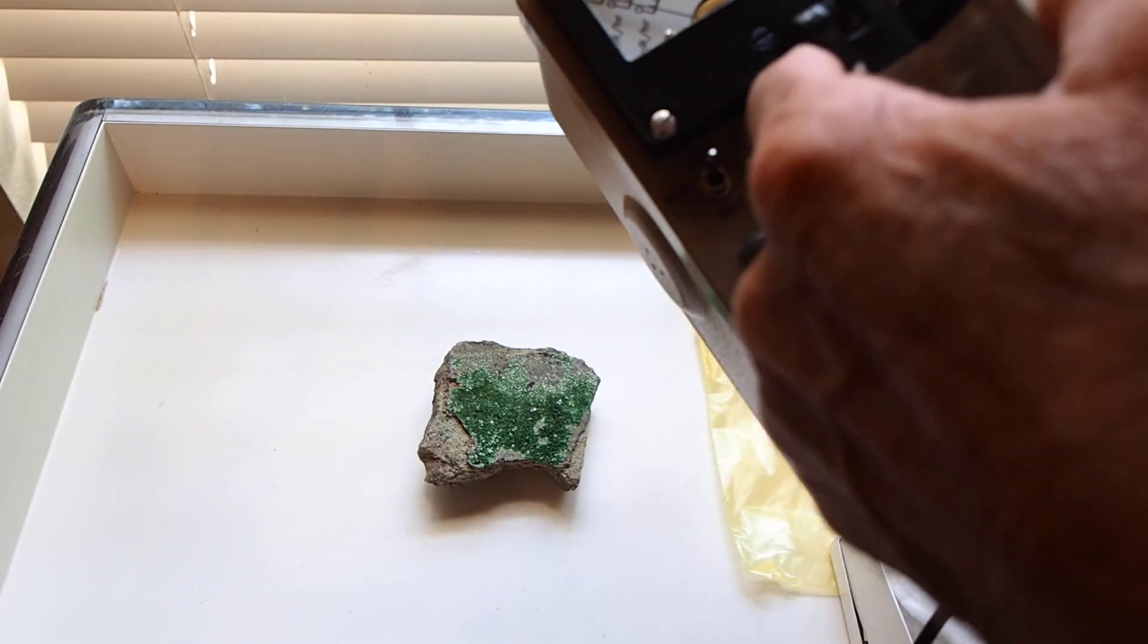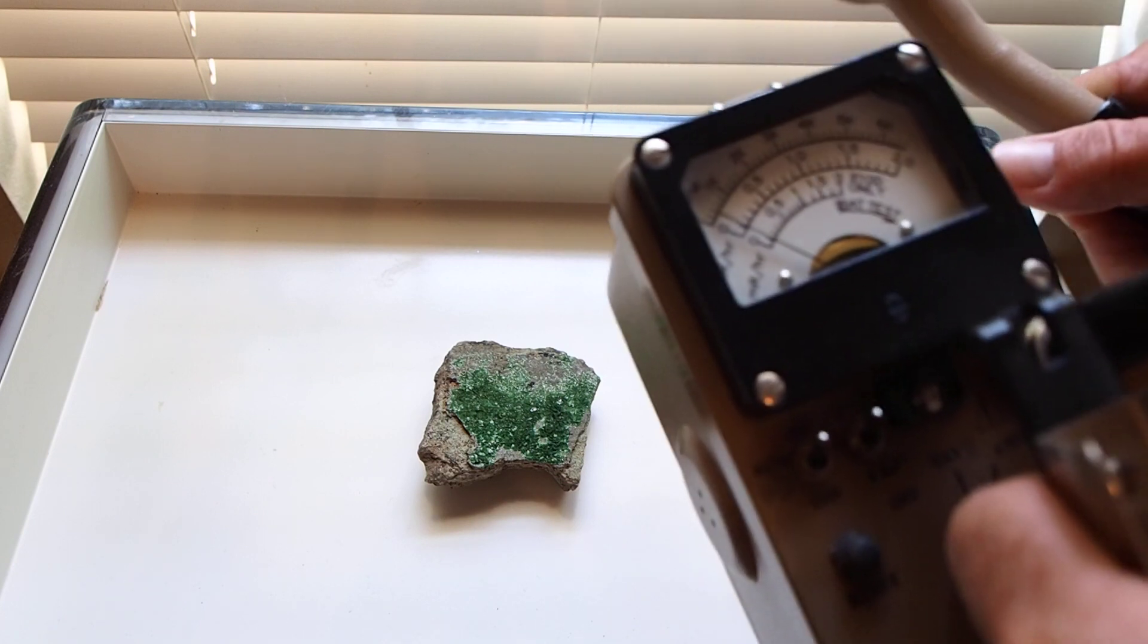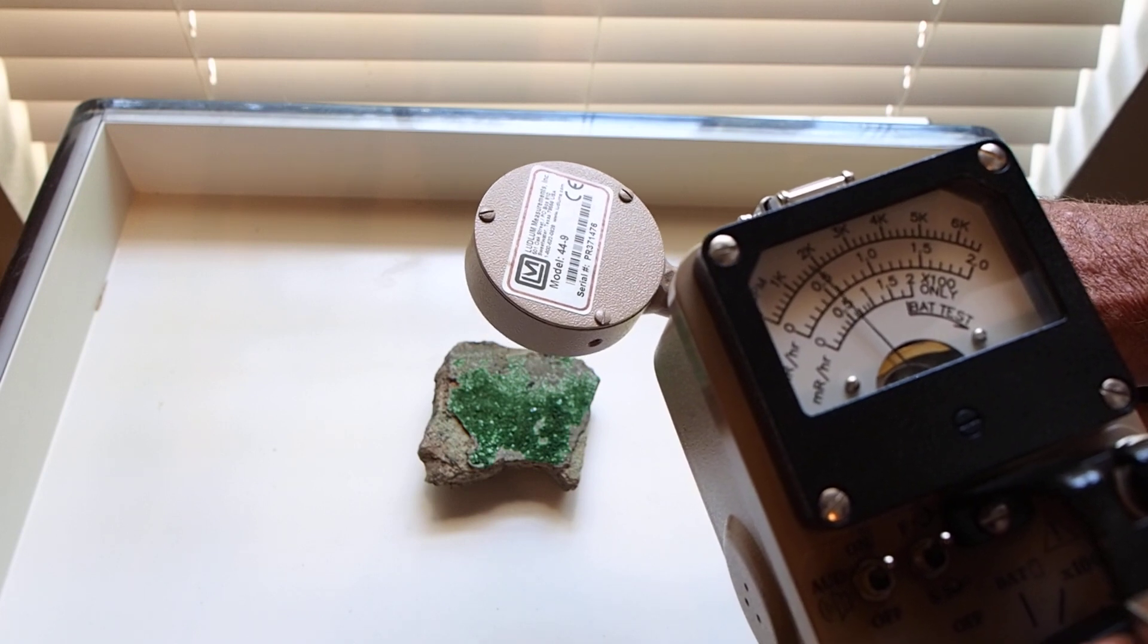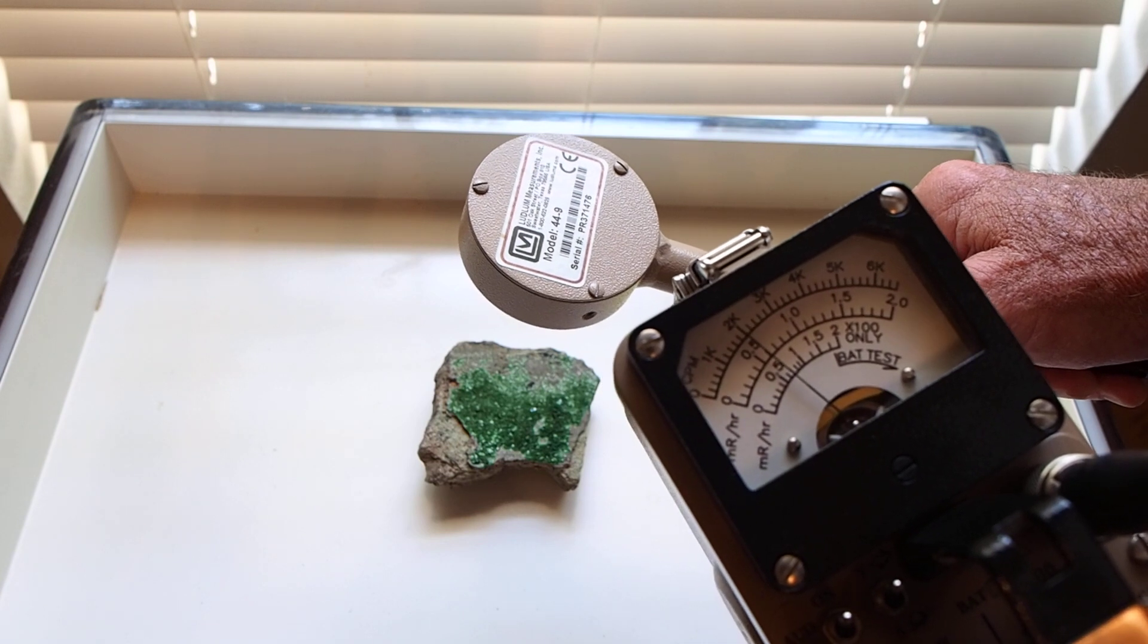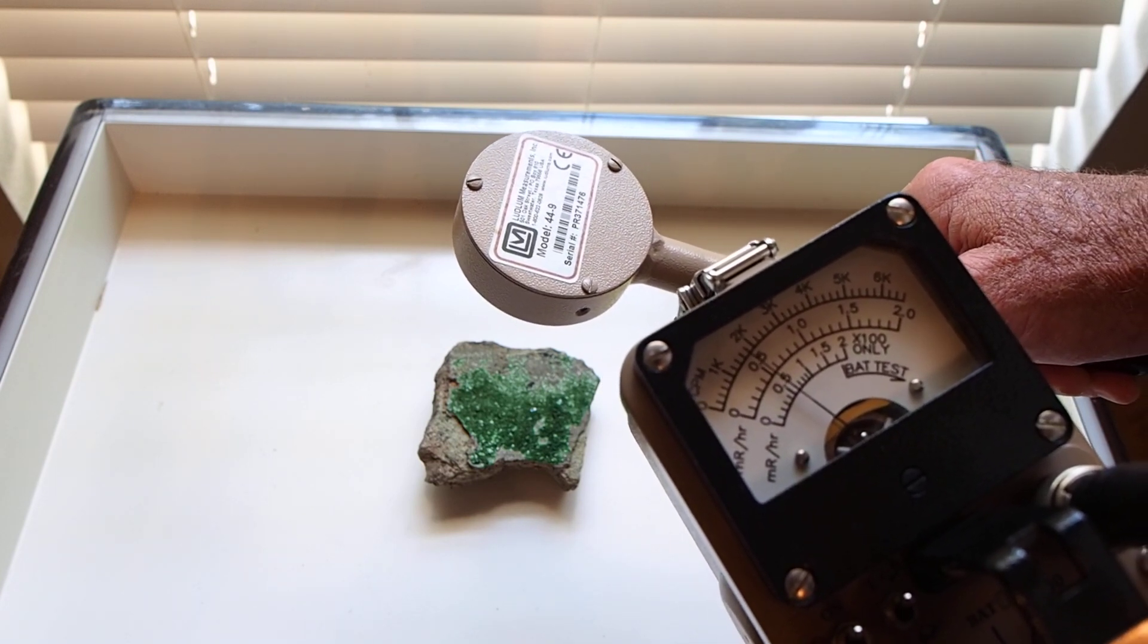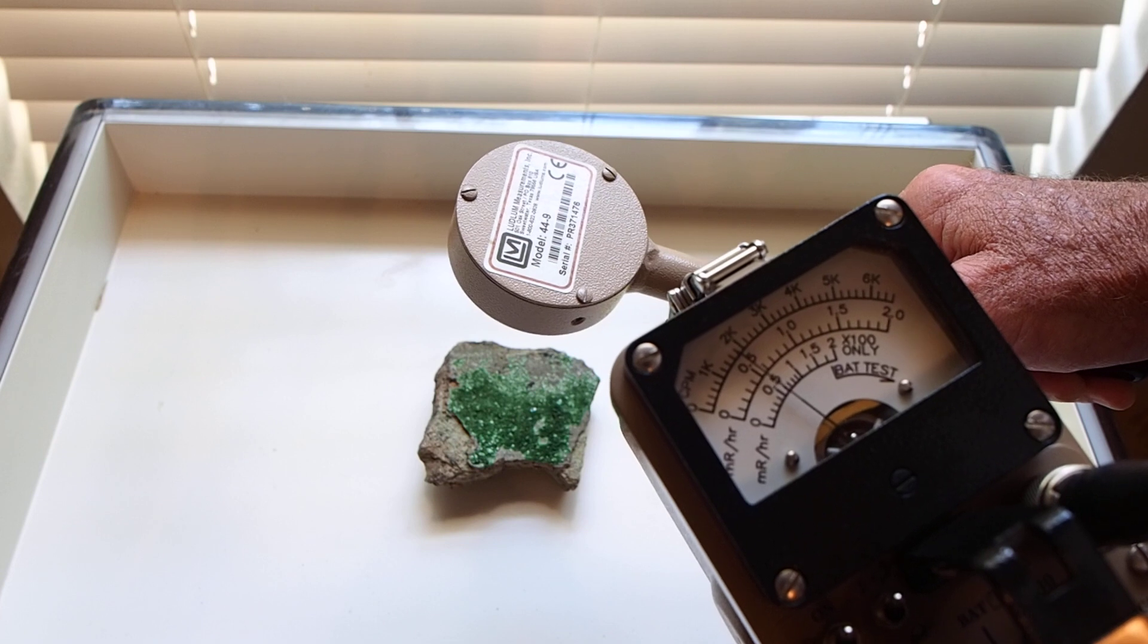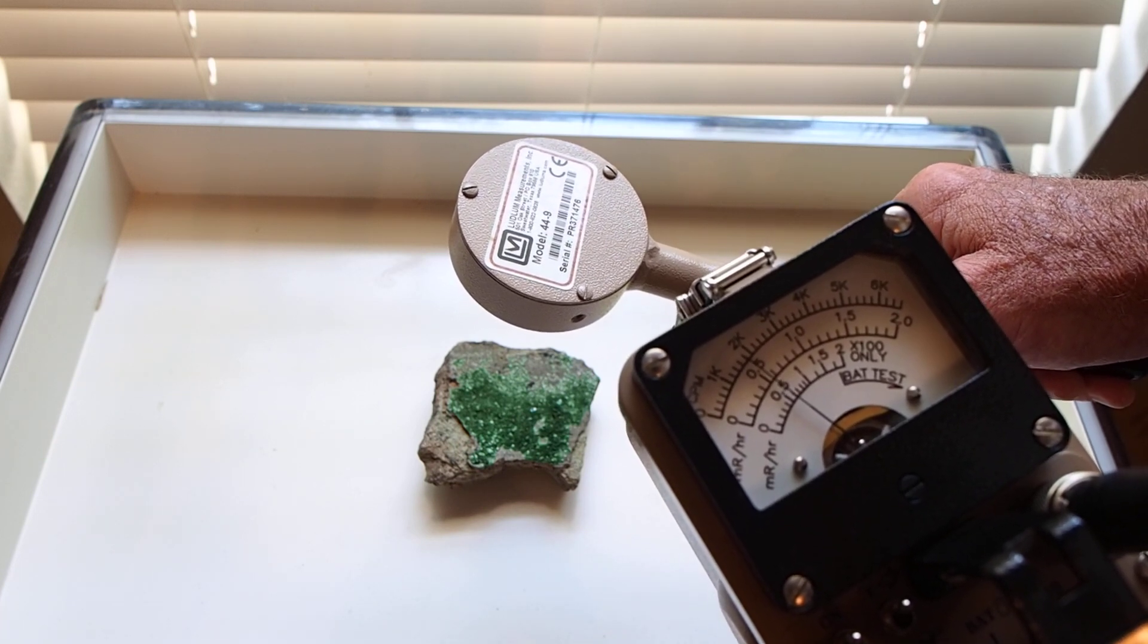Change our meter back to the times 10 setting. And it will be a little more accurate at that distance. Right now, we're approximately 6 inches from the specimen. And we're getting a reading of approximately 18 to about 19,000 counts per minute.